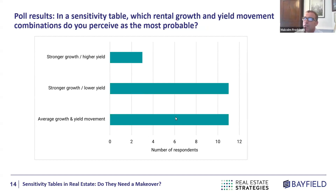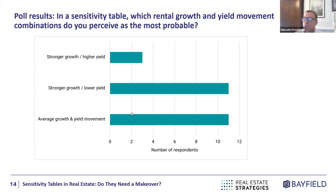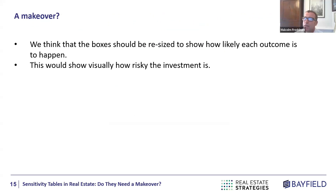A lot of people also voted for the fact that average growth and average yield movement is the most likely outcome — and that's also true, because you are quite weighted towards the middle in terms of likelihood.